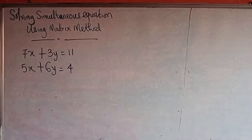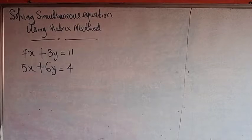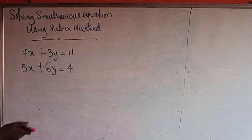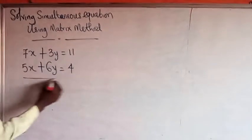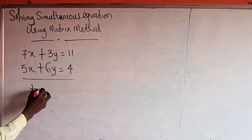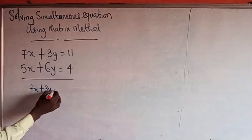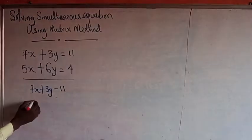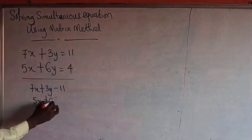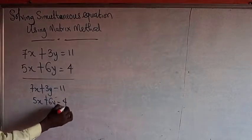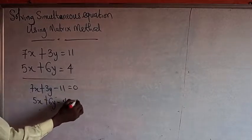So, I want to solve an example here. I want to find the value of x and y. Very simple. The first thing you do is bring your terms to one side. That will give us: 7x plus 3y minus 11 equals 0, and 5x plus 6y minus 4 equals 0.